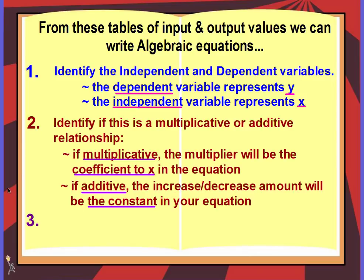Step 2: identify it as a multiplicative or additive relationship. Multiplicative is when you're multiplying or dividing by a certain number. If it's multiplicative, the multiplier will be the coefficient to x in the equation — for example, if you're multiplying by 2, it's 2x. Whatever you're multiplying or dividing by will be the coefficient.